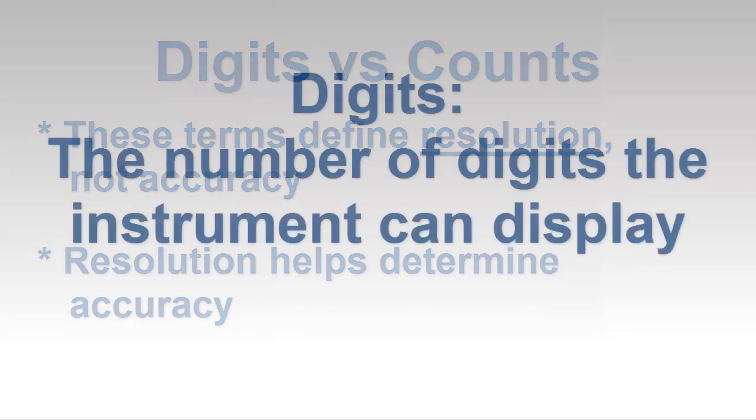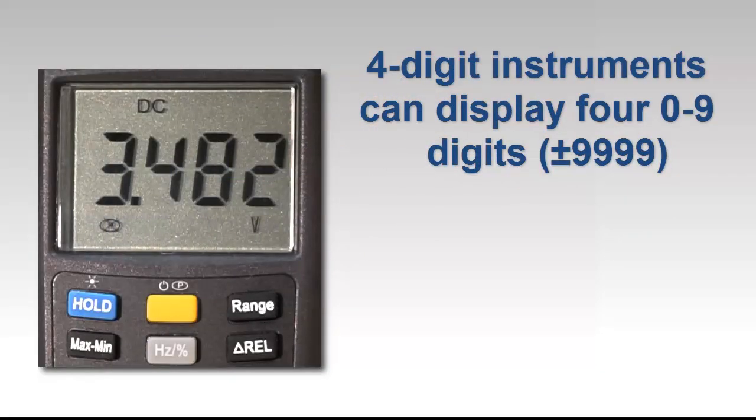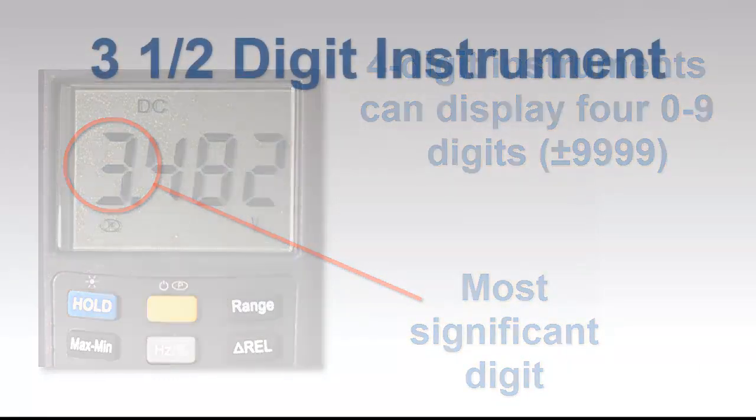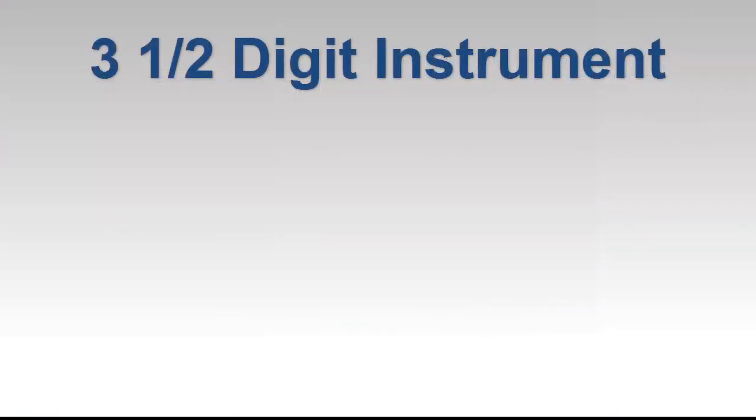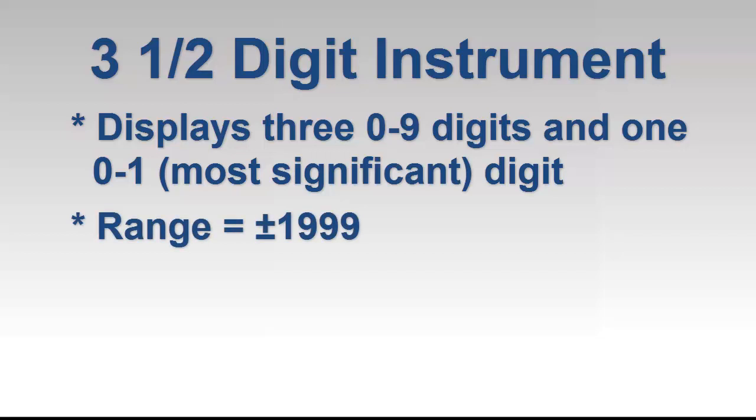Digits defines the number of digits an instrument can display. For example, a four-digit multimeter can display four zero through nine digits. This fairly simple concept becomes more complex when the leftmost digit, usually called the most significant digit, cannot display the full range of numbers. For example, a so-called three-and-a-half-digit instrument can display either a one or zero as the most significant digit. Thus, the highest reading this multimeter can display within a single measurement range is 1999. Readings greater than this must be displayed in a higher range, if available.